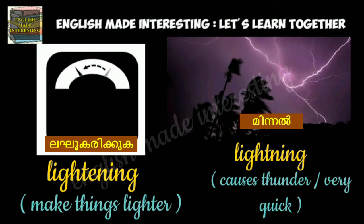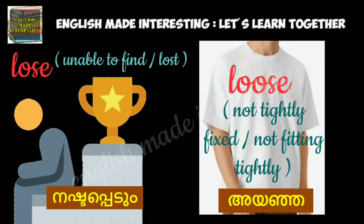Lightning. L-I-G-H-T-E-N-I-N-G, 'lightening', which means to make things lighter. L-I-G-H-T-N-I-N-G, 'lightning', which causes thunder or refers to something that is very quick. L-O-S-E, 'lose', means unable to find something, and the past tense of lose is L-O-S-T, 'lost'. L-O-O-S-E, 'loose', which means not tightly fixed or not fitting tightly.